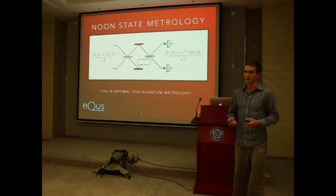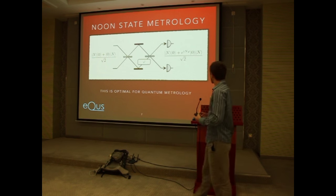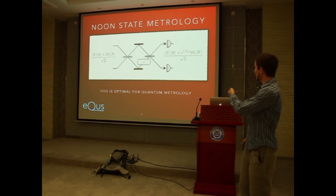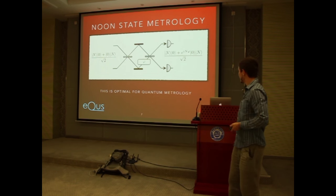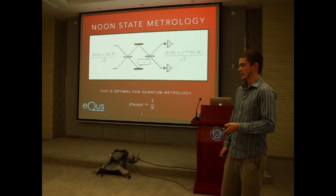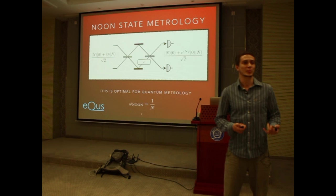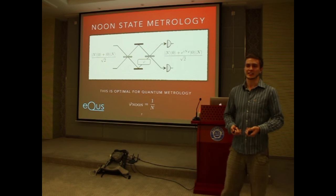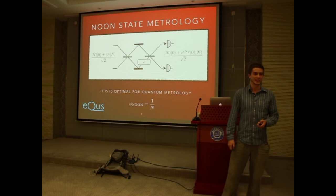In metrology, it's been known for quite a while that NOON states are optimal and actually reach the Heisenberg limit. We have a superposition of N photons in each mode; they interrogate some unknown phase. The sensitivity goes as one over N, which is the Heisenberg limit. N here is the number of photons, but it's better thought of as the number of resources the experimentalist has access to.